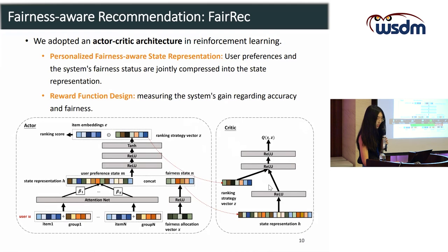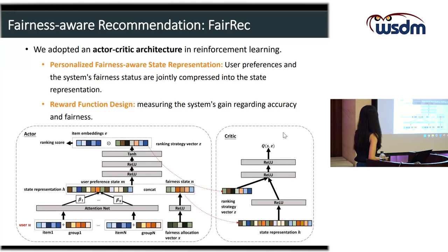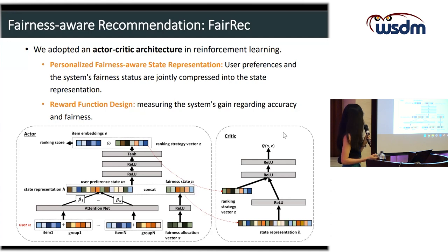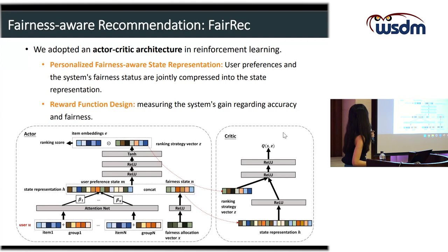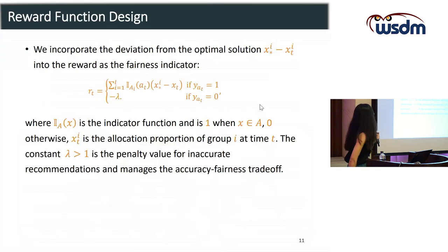The critic network evaluates the value of the output of the actor. The actor network is trained by the value produced by the critic, while the critic network is trained with the reward. Our reward function measures the system's gain regarding both accuracy and fairness.